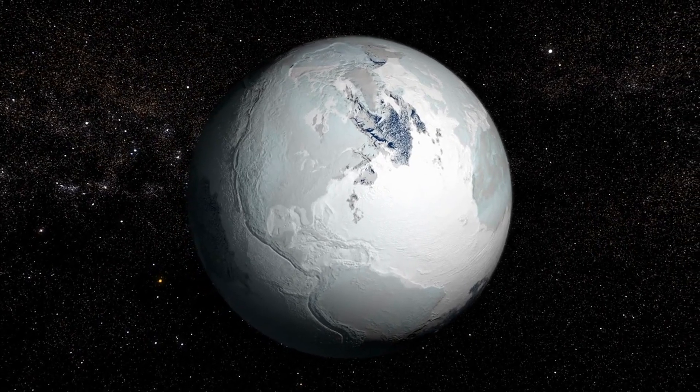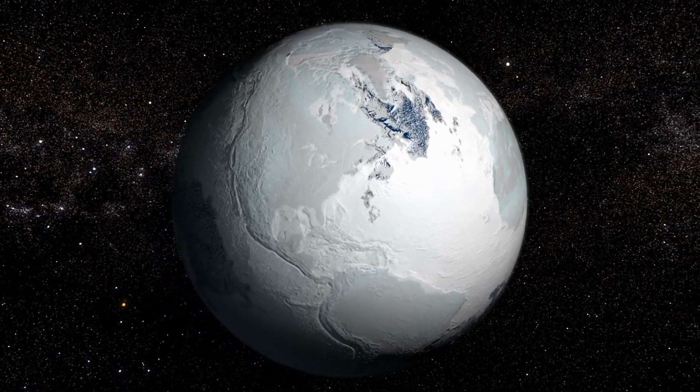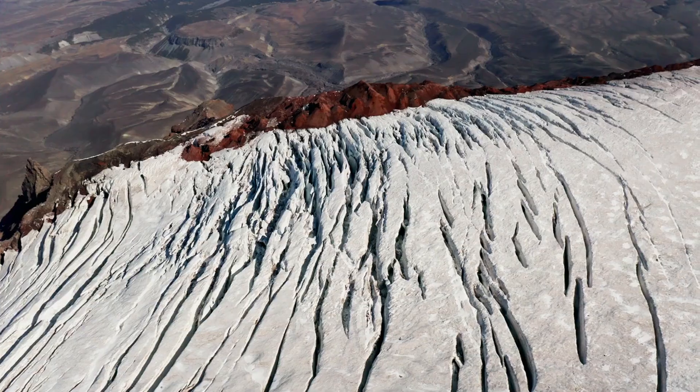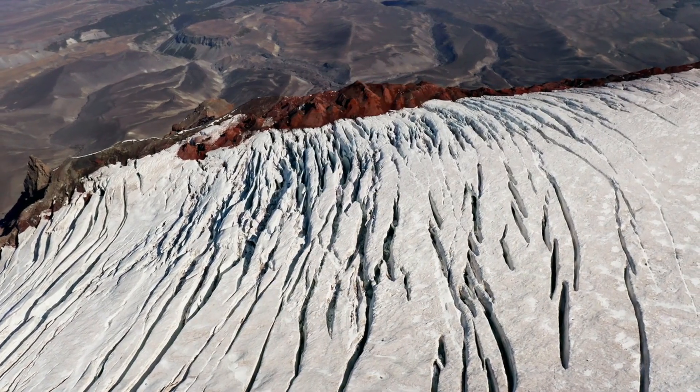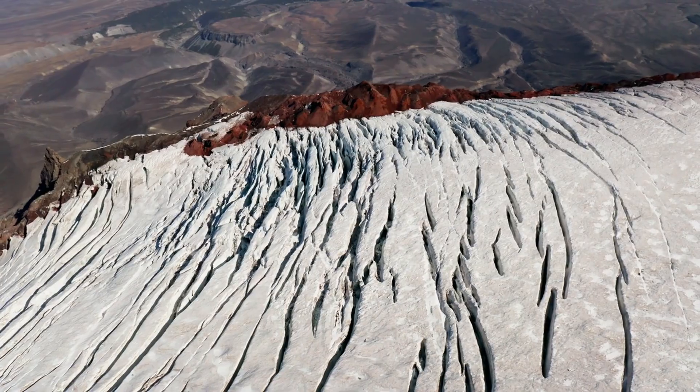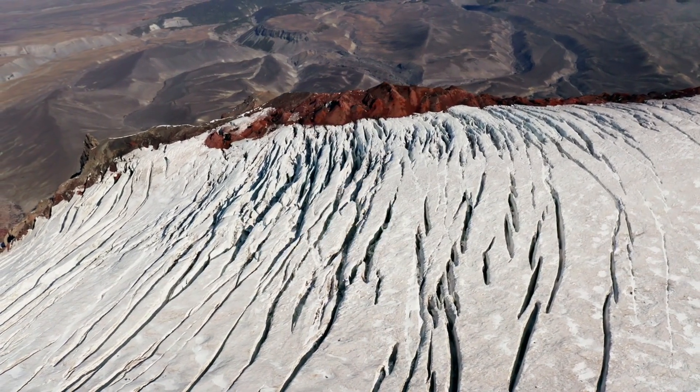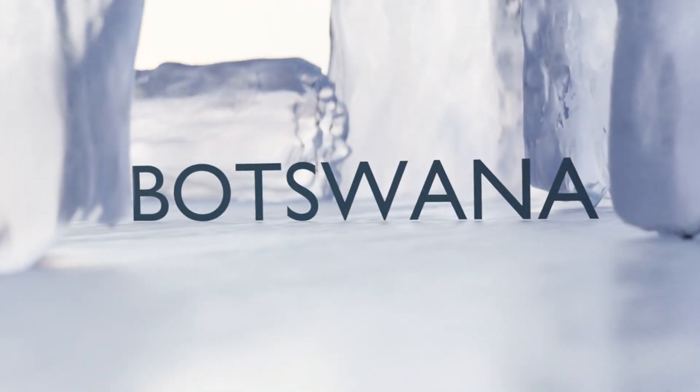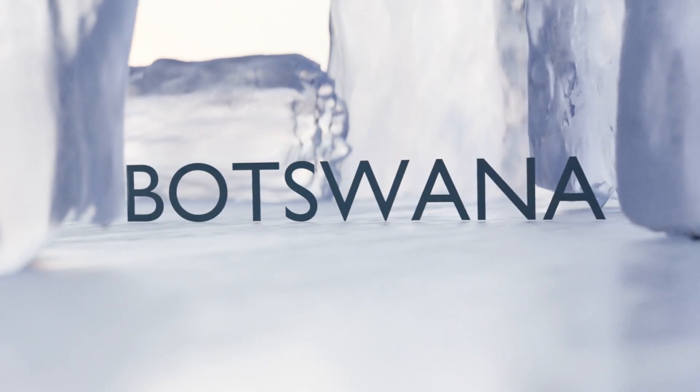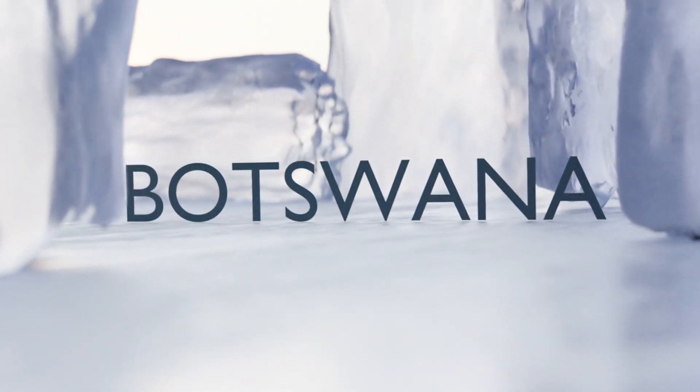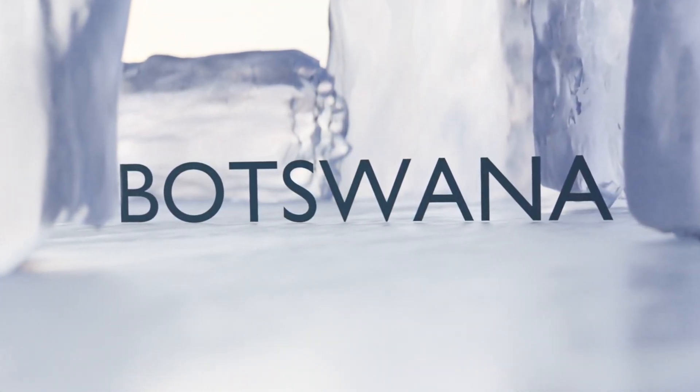The snowball Earth hypothesis suggests that ice sheets covered nearly the entire surface of Earth, including equatorial regions. This hypothesis is supported by glacial deposits found in tropical latitudes and paleomagnetic data, indicating that these deposits formed near the equator. A competing model, the slushball Earth hypothesis suggests that while much of the Earth was frozen, equatorial regions remained ice-free or partially ice-covered, allowing some liquid water to persist and sustain life.